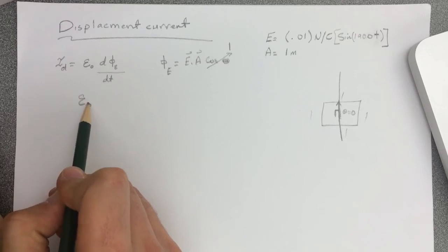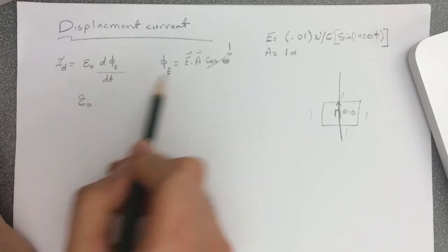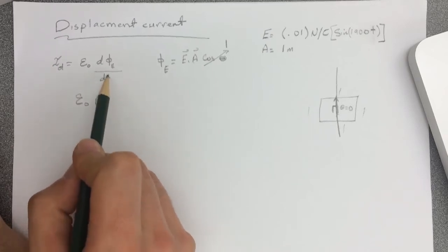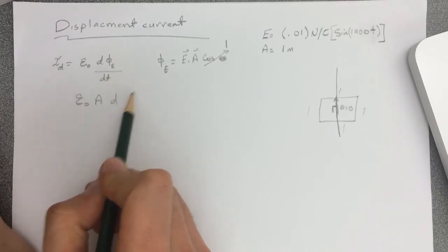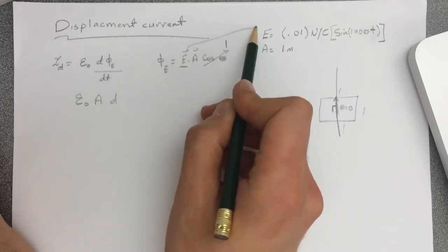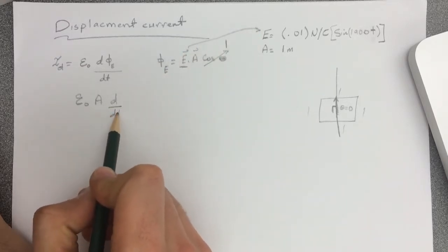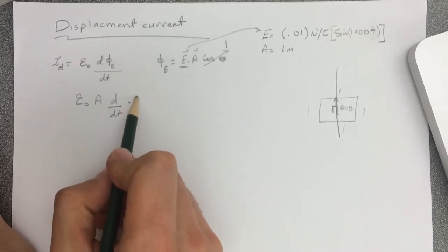So let's put them all together. So epsilon not, and then the area is constant, and then d over dt. We can substitute E from this equation here. So it's d over dt 0.01 cosine of 1900t.